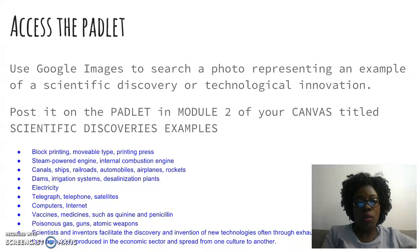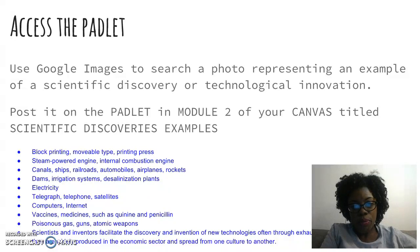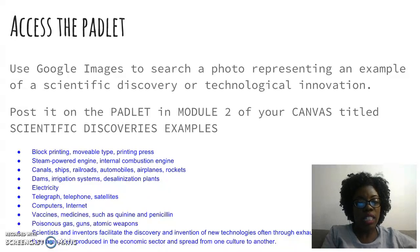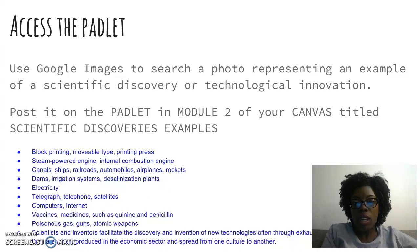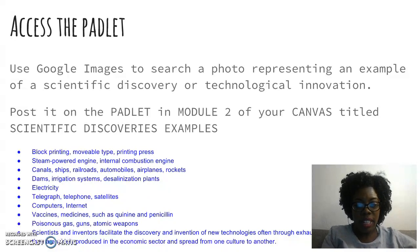Then, when electricity was invented, you have things like computers, internet, and the telephone. Even things that don't have anything to do with electricity, like certain vaccines or medicines like penicillin, poisonous gas, guns, and automatic weapons — all of those are things that scientists and inventors had to come up with one day, and they helped to shape the world that we live in today.